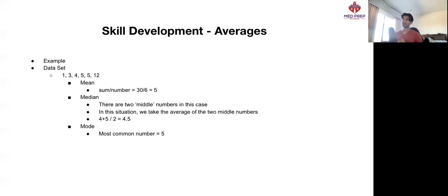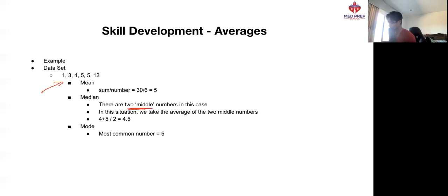Our median is calculated by looking at the middle number when everything is ordered from smallest to largest. Everything in this case is ordered smallest to largest, but we can see there's no single middle number because there are actually two numbers in the middle — this 4 and the 5. So in this situation, we take the mean average of the two middle numbers, which would be 4 plus 5 divided by 2, giving us 4.5.